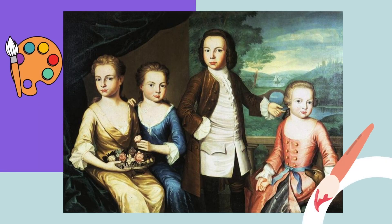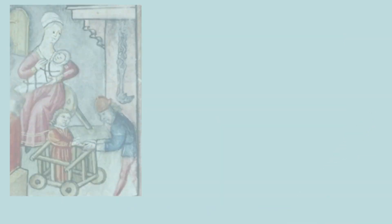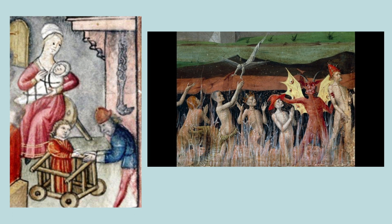Throughout history children were often depicted as miniature adults in art and culture. However, societal perceptions of what ages count as childhood and attitudes towards children have varied across time and cultures. During the medieval era children were seen as vulnerable beings requiring protection, while the Reformation period brought a contrasting view, considering children as inherently evil and in need of civilizing.